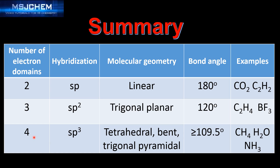Atoms with four electron domains feature SP3 hybridization. The molecular geometry is tetrahedral, bent, or trigonal pyramidal, and the bond angle is equal to or less than 109.5 degrees. Examples include CH4 methane, H2O water, and NH3 ammonia. Don't forget to check the video description for a link to a practice worksheet.